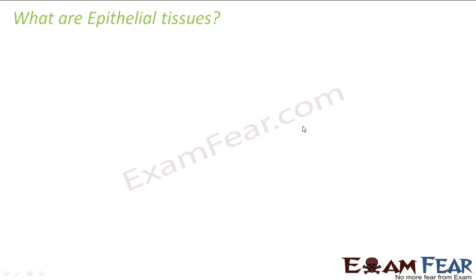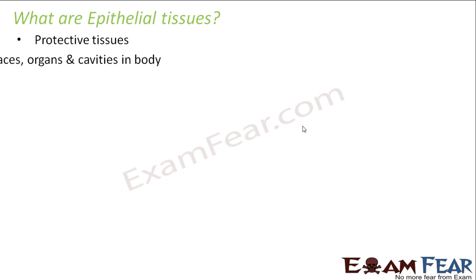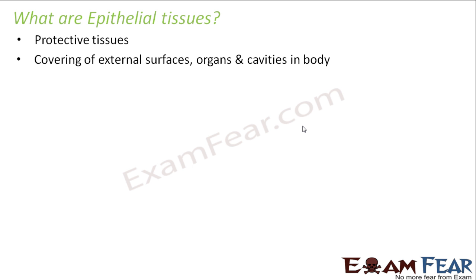So what are epithelial tissues? These are the protective tissues — they actually protect all other things and they are like an outer covering, an outer protective covering. They are the covering of external surfaces, organs, and cavities in the body.